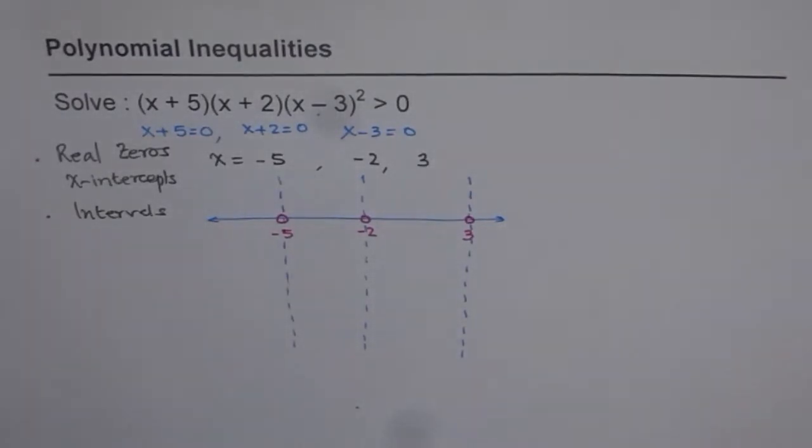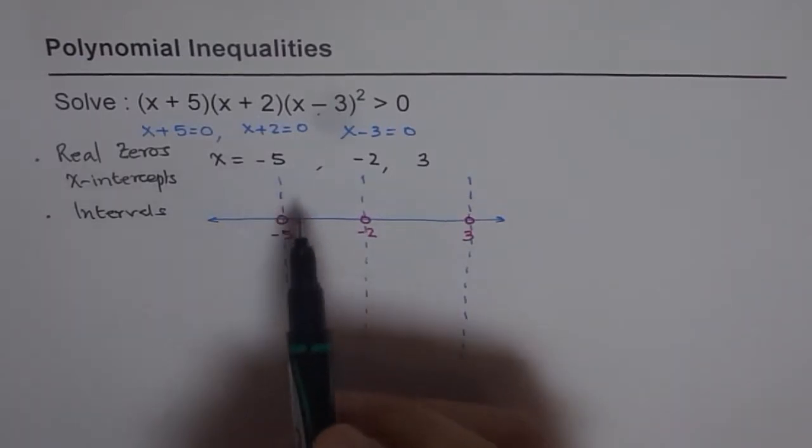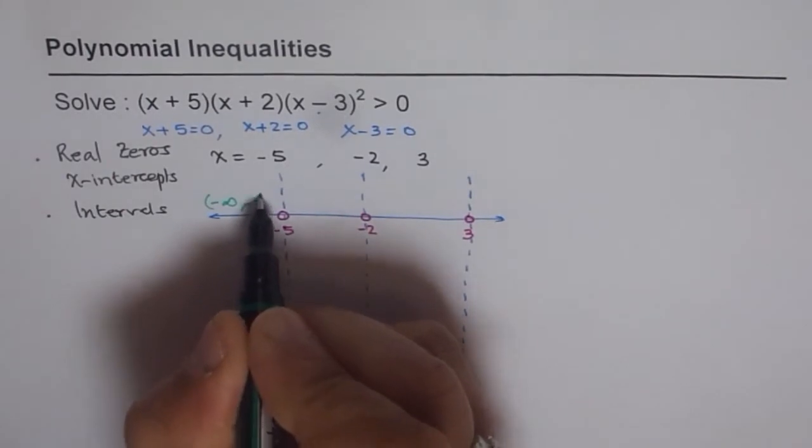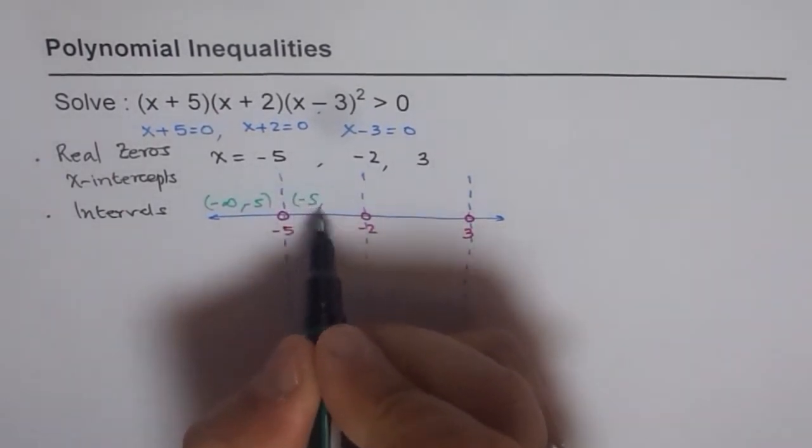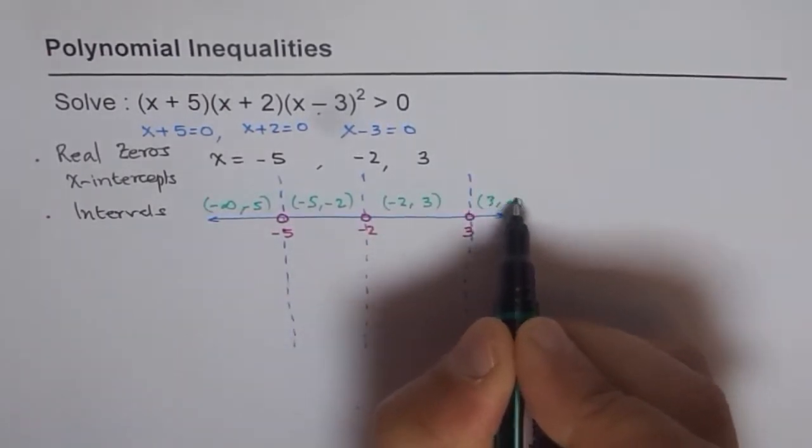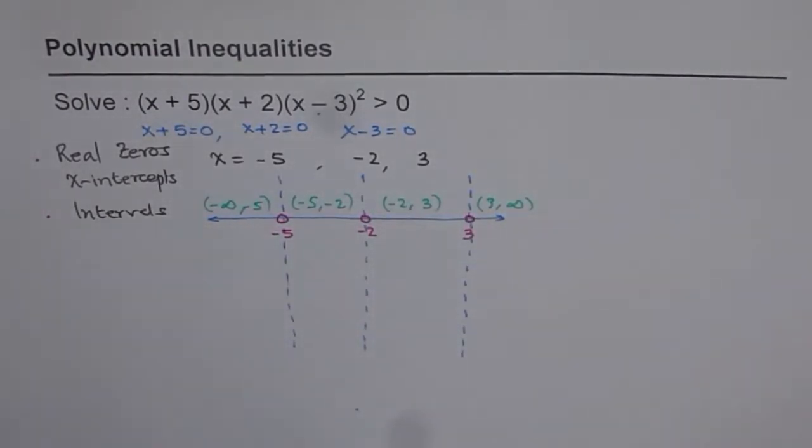So this is the base for us to solve any polynomial inequality. For that matter, the policy is same, whether it is polynomial or a rational function or any other function, when we are doing inequalities. Now as we can see here, we do have different intervals in which these zeros have divided. The intervals for us are from minus infinity to minus 5, and from minus 5 to minus 2. This interval is from minus 2 to 3, and then we have an interval from 3 to infinity. So three zeros will divide the plane or the number line in four intervals.